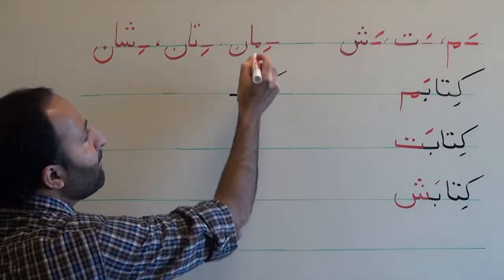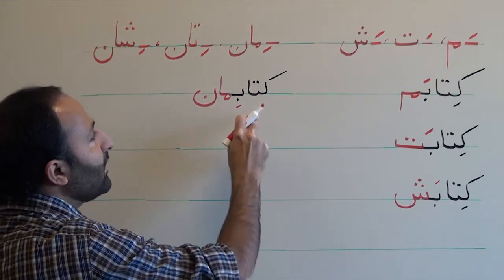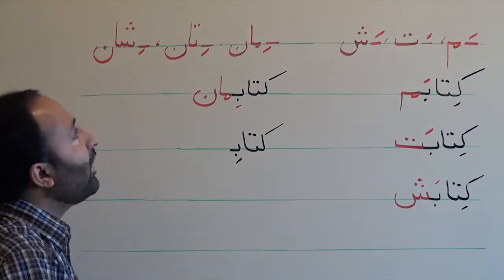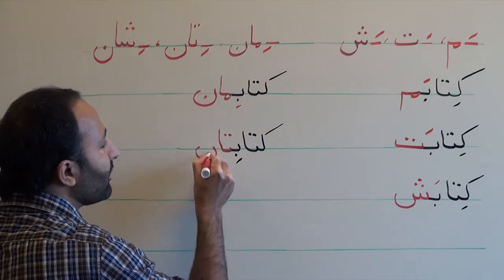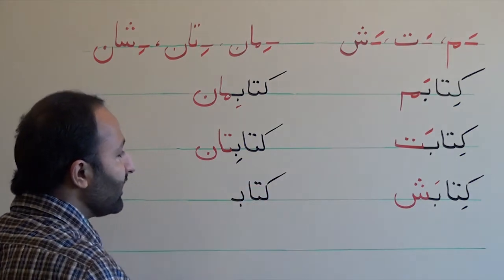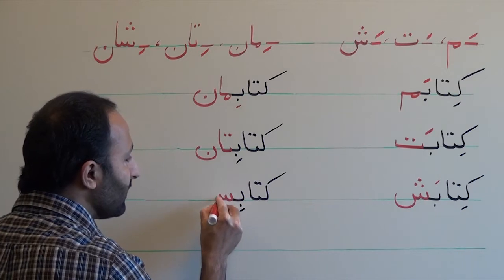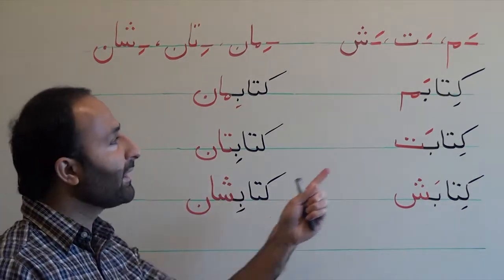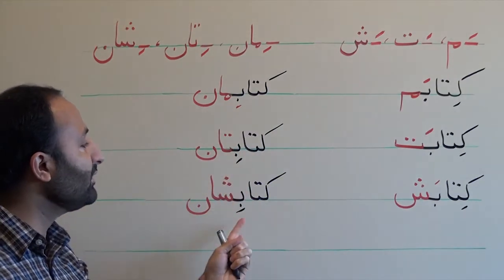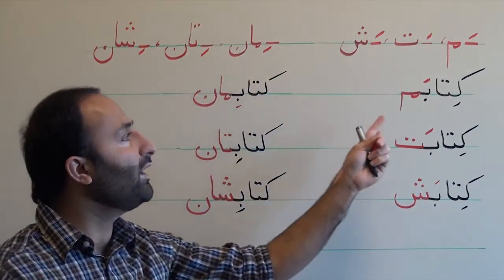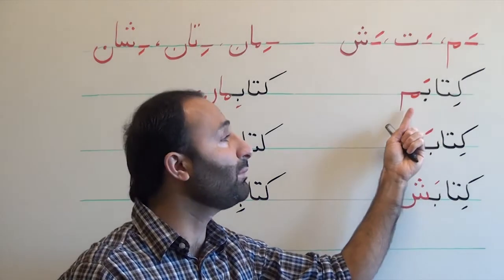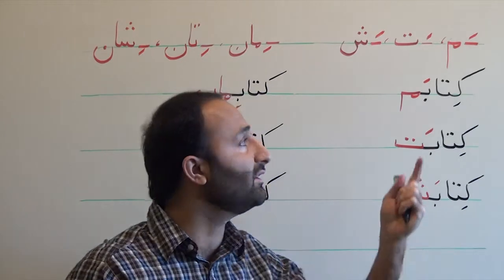Now the plural forms: 'ketab-eman' means our book; 'ketab-etan' means your book, plural; and 'ketab-eshan' means their book. So reviewing all six: ketab-am, ketab-at, ketab-ash, ketab-eman, ketab-tan, ketab-ashan. These personal endings, whenever they are attached to a noun, function like a possessive adjective.